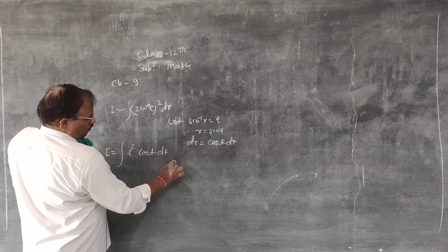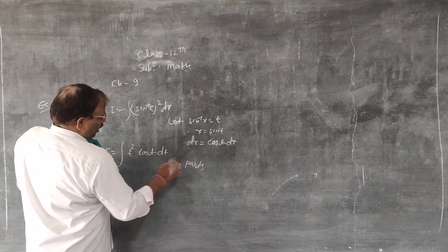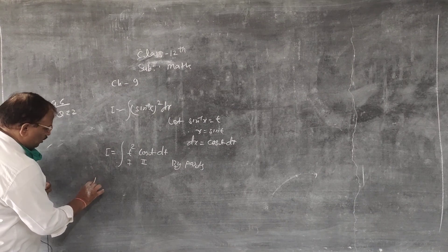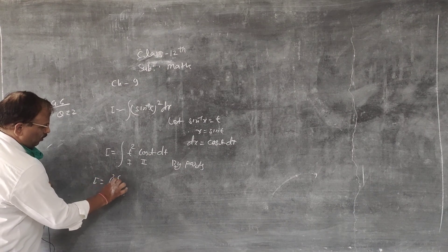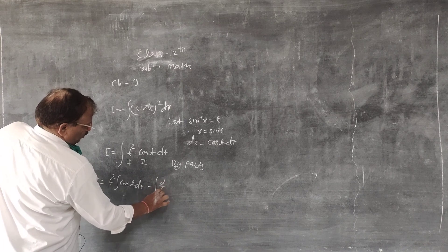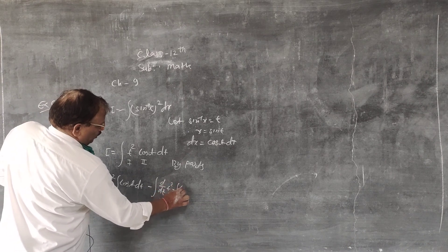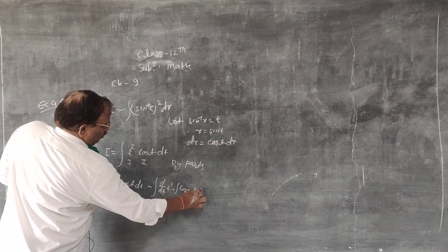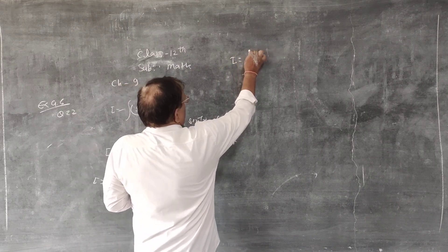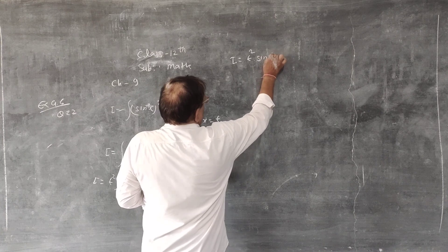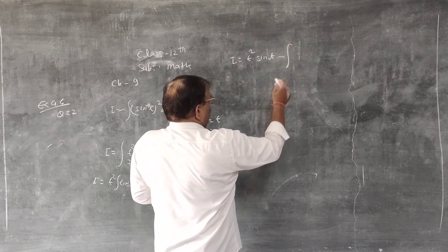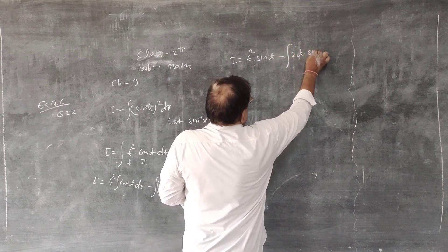Apply integration by parts. Take t² as first function (algebraic) and cos t as second function (trigonometric). Integration by parts formula: first function × ∫second function − ∫(differentiation of first × ∫second). So i = t² · sin t − ∫2t · sin t dt.